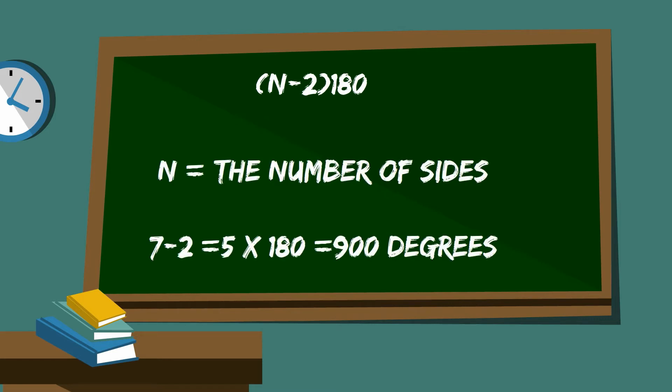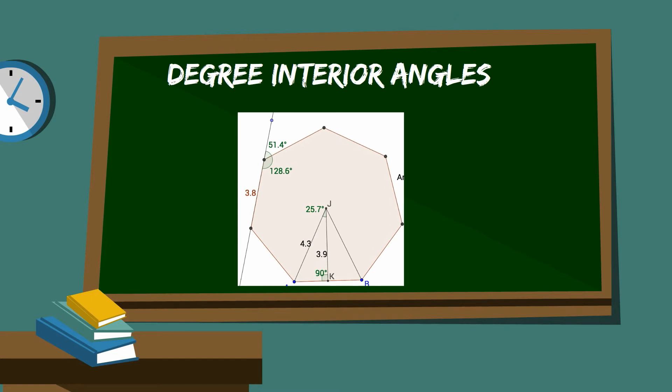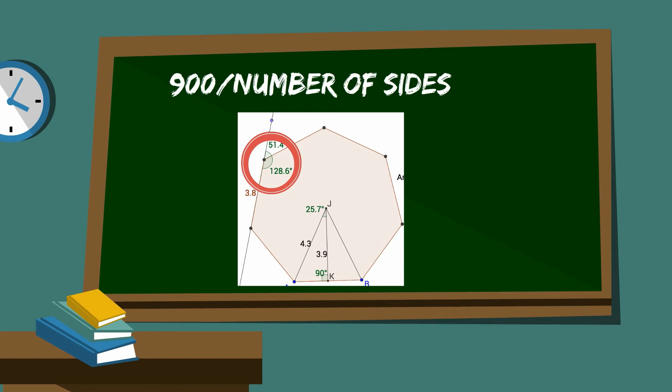So if you do the math, the interior angles of a Heptagon is 900 degrees. You can get the degree measure of the interior angles by taking 900 and divide it by 7, which is 128.57 or 128.6 degrees.